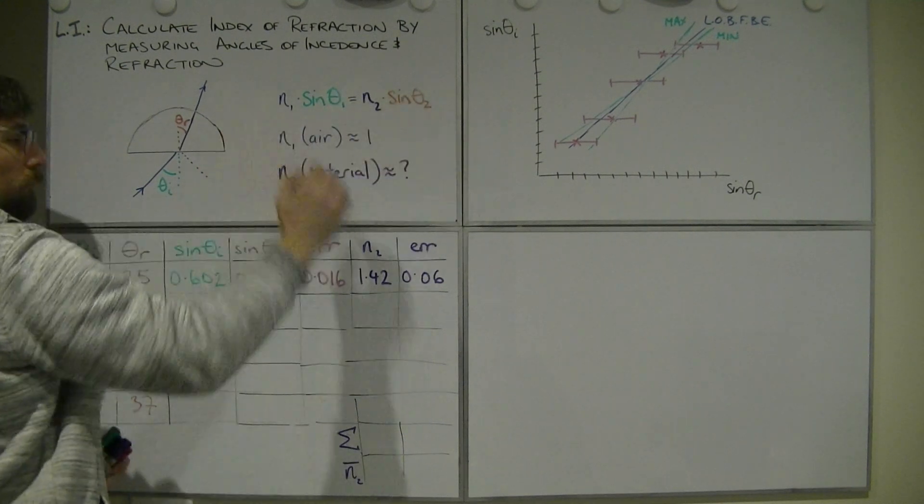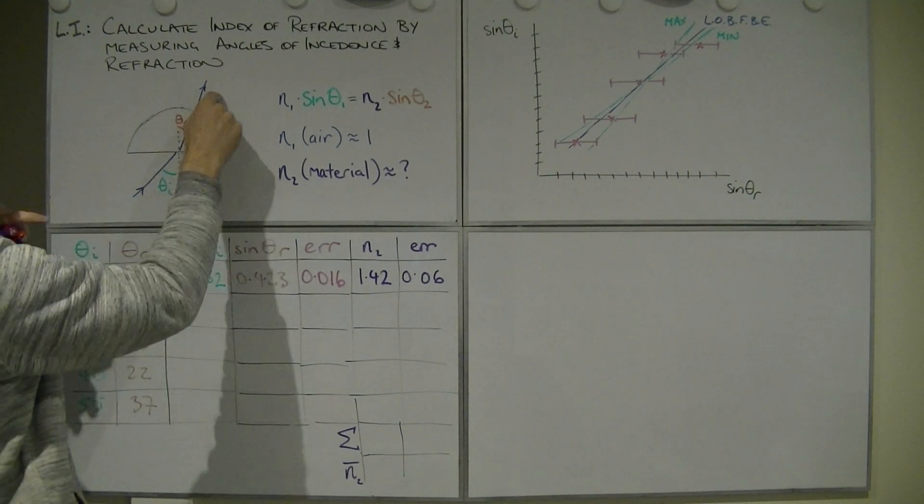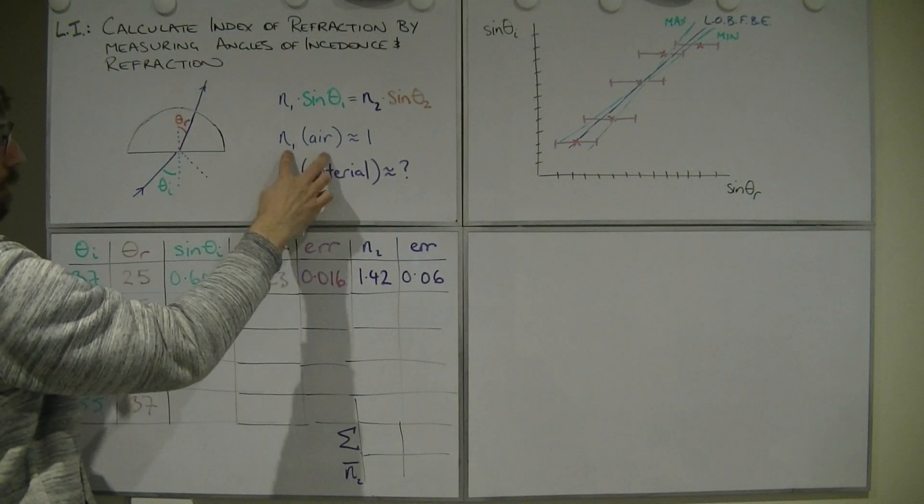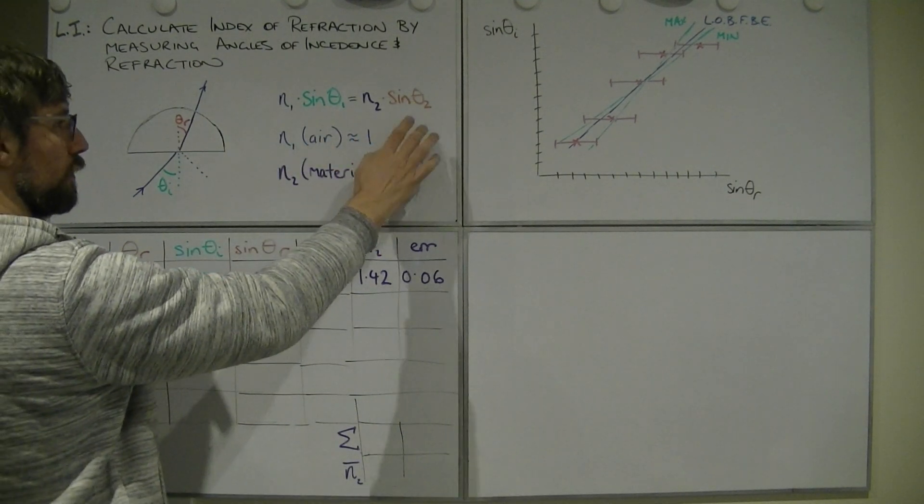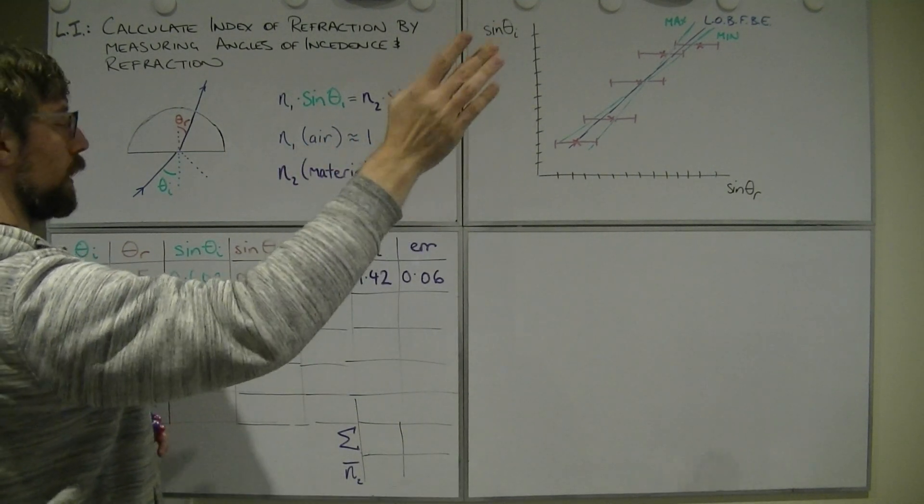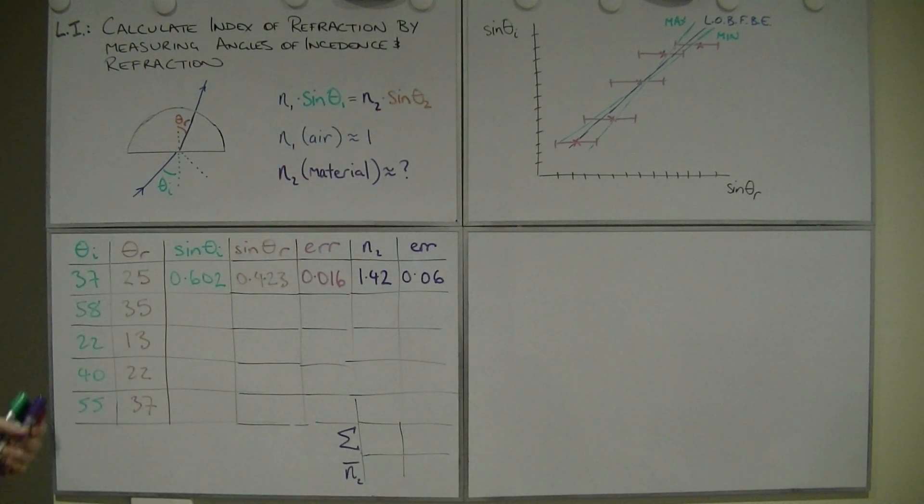Snell's rule, we've got. We're going to already know that this is air, this is the material, then it goes back to air, don't care. Index of refraction for air is almost exactly one, it's like 1.00, possibly another zero and then tiny. So it may as well be one, it's this material's index of refraction that we're interested in.